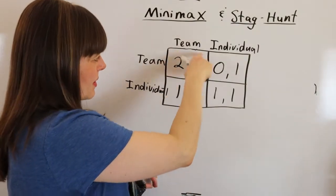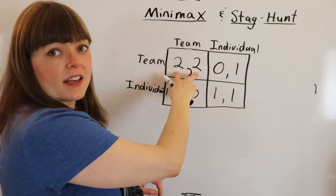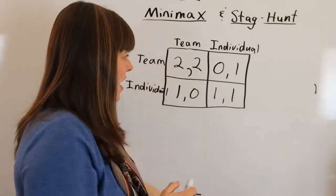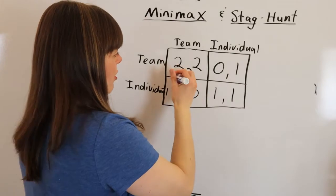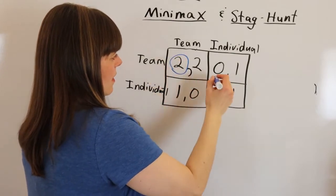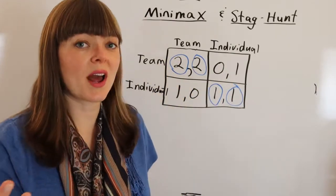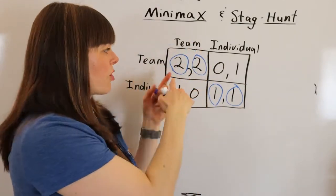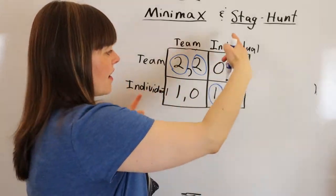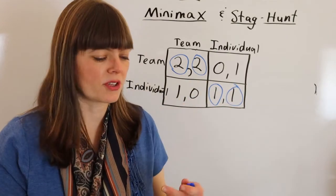And so the highest possible payoff here is going to be up in this box. And if you actually solve the Nash equilibrium for this particular game, what you're going to find is two Nash equilibriums. One Nash equilibrium is both people work on the team project together. And another Nash equilibrium is each person works separately.